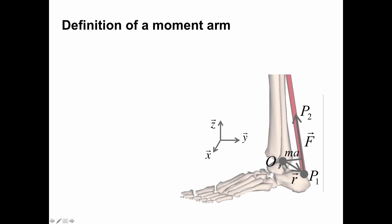So the definition of a moment arm. The simplest way to put it is the perpendicular distance from the joint center to the line of action of the muscle. Here our joint center is O. We've got our insertion point of the muscle, which is P1. And then this red thing here is a muscle where the vector pointing from P1 towards P2 is vector F, which denotes the muscle force — the orientation of the vector and the magnitude.